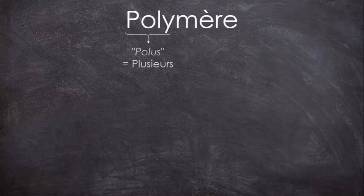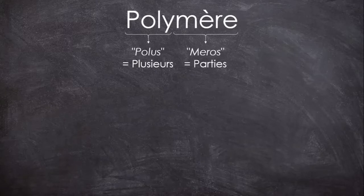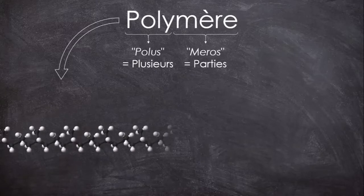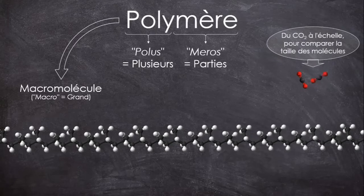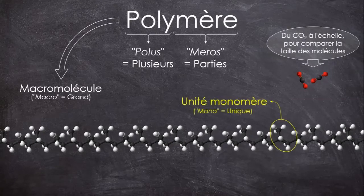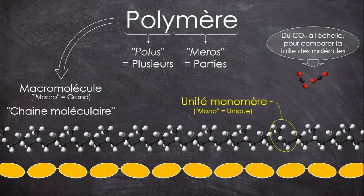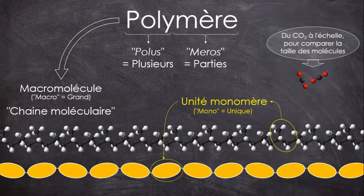Polymère vient du grec « polus » et « meros », ce qui signifie plusieurs parties. Les polymères sont en fait de très grandes molécules, qu'on appelle des macromolécules, constituées d'une multitude de petites briques élémentaires qui se répètent et qu'on appelle des unités monomères. On parle aussi de chaînes moléculaires, puisqu'une molécule polymère est associable à une longue chaîne, dont chaque unité monomère serait un maillon.